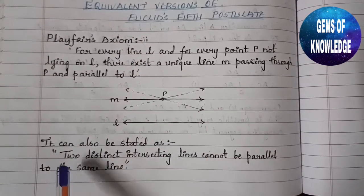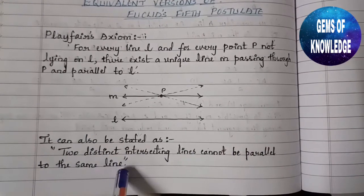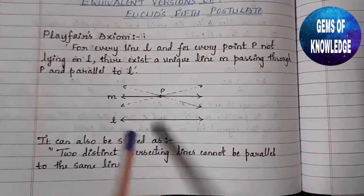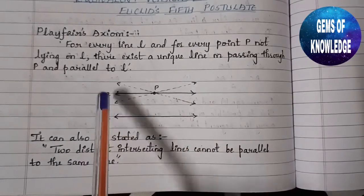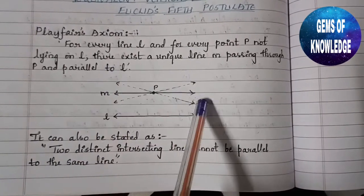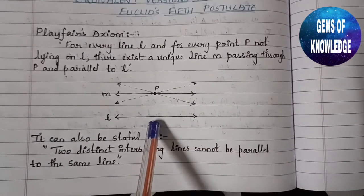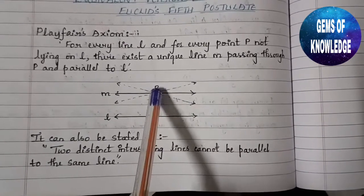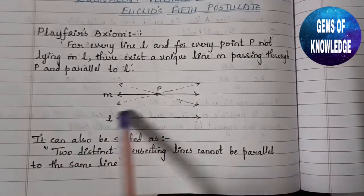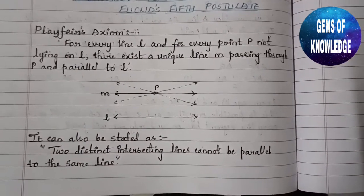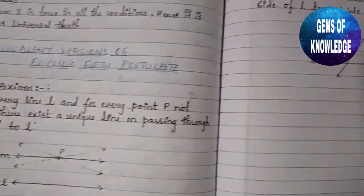It can also be stated as: two distinct intersecting lines cannot be parallel to the same line. So if two lines are intersecting each other, they cannot both be parallel to a third line. This is the equivalent version of Euclid's fifth postulate.